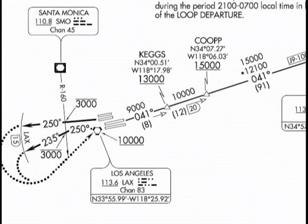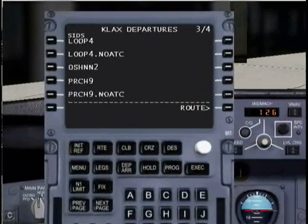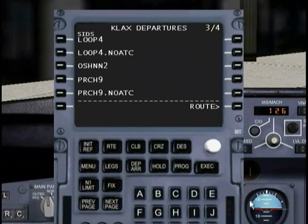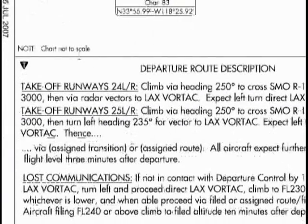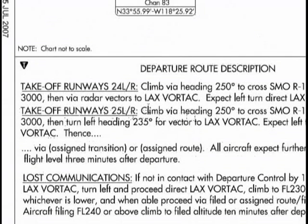So why am I doing this the long way? Well, it's probably better for you to learn this way, and the more important reason is that this information is not always going to be up-to-date depending on what database cycle you have in the flight management computer — I always prefer to just do things by hand. So let's start entering our route. Back at our plate, looking at our route description: we're going to be departing from Runway 25 Left, and we're told to climb via heading 250 to cross the SMO Radio 160 at or below 3,000, then turn left.